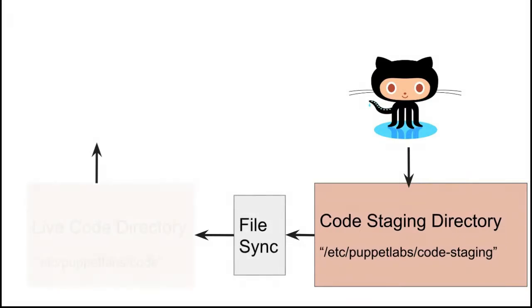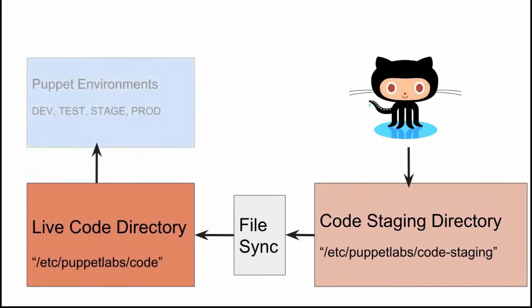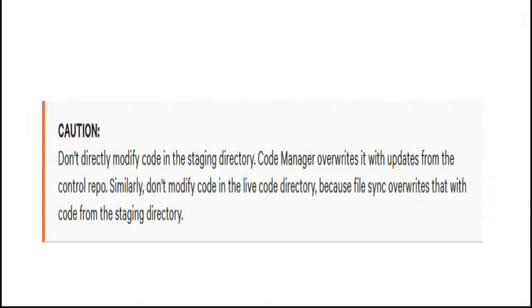This means you can no longer write code to the code-dir. Instead, CodeManager moves new code from source control into the staging directory, and then file sync moves it into the live code directory. Don't directly modify code in the staging directory — CodeManager overwrites it with updates from the control repo. Similarly, don't modify code in the live code directory, because file sync overwrites that with code from the staging directory.